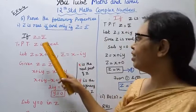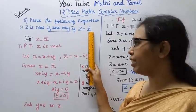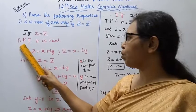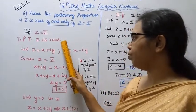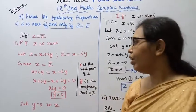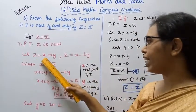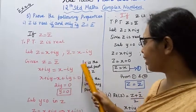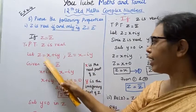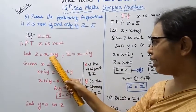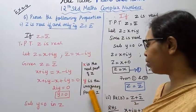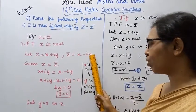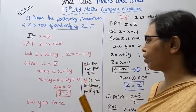First, if z equals z̄, we need to prove that z is real. Let the complex number z equal x plus iy, so z̄ equals x minus iy. Here x is the real part of z and y is the imaginary part of z.